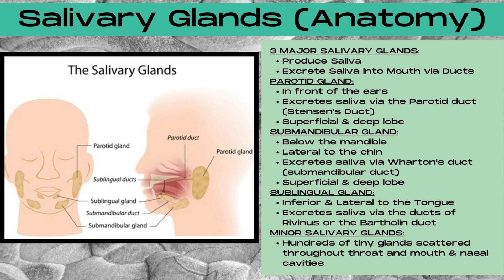The next salivary gland is the submandibular gland, located below the mandible just lateral to the chin. This excretes saliva via Wharton's duct, also known as the submandibular duct. It also has superficial and deep lobes.